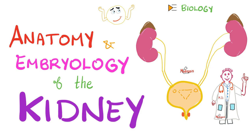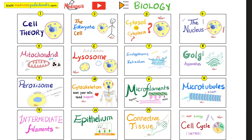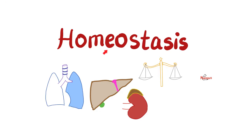We will start this by discussing the anatomy and the embryology of the kidneys. As you know, you have two kidneys, two ureters, one urinary bladder, and one urethra with an internal sphincter and an external sphincter. This is my biology playlist — please watch these videos in order for maximum retention.